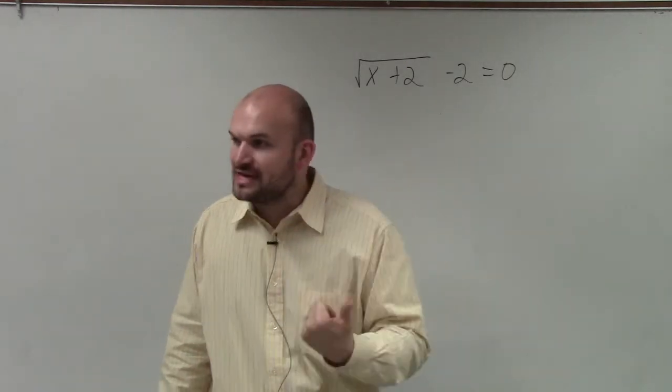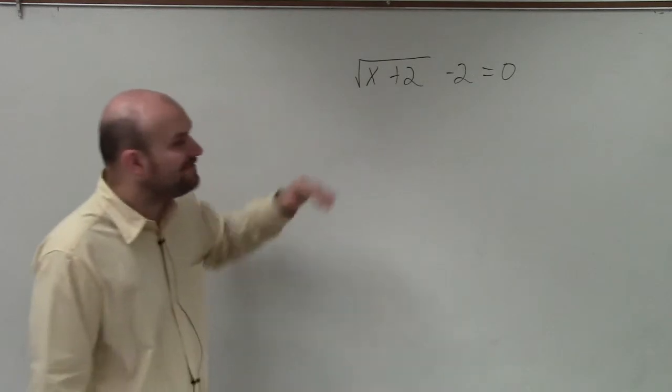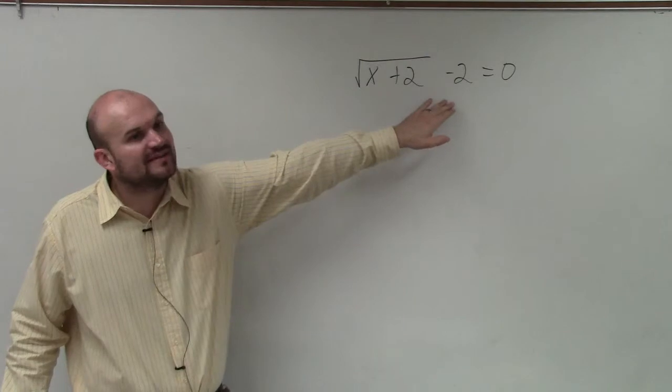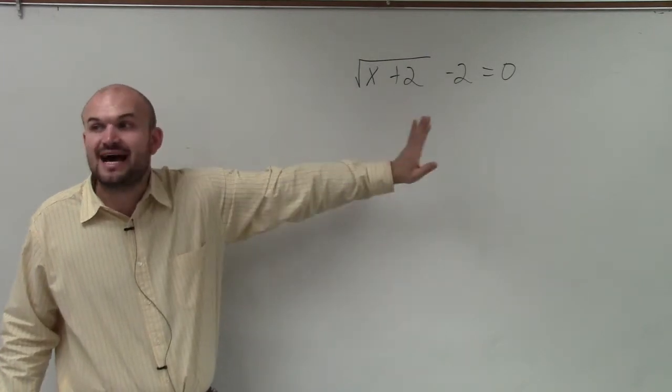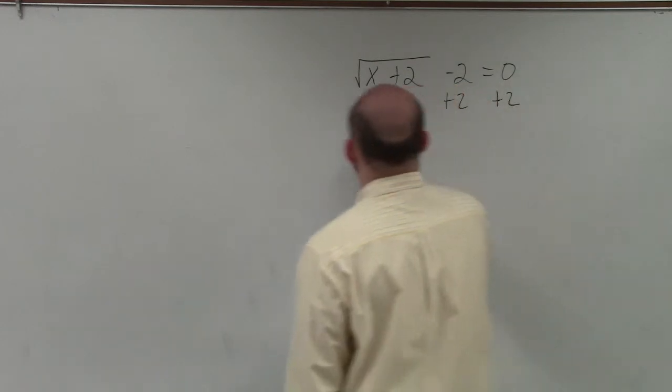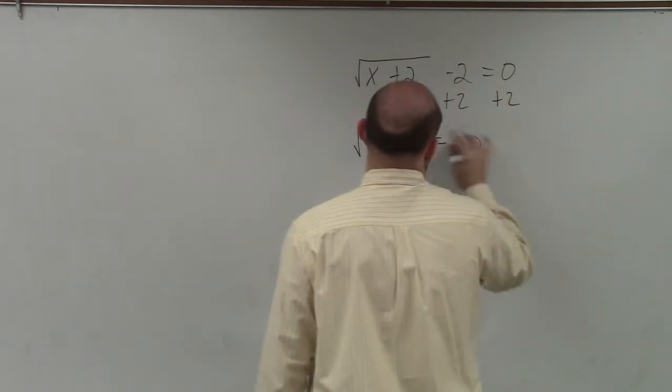Now, before we can apply our inverse operations for the square root, we have to make sure we isolate the square root. So the first thing we're going to do is get rid of this subtracting two, because it's not under the radical. So I'm going to add 2 to both sides. x plus 2 equals 2.